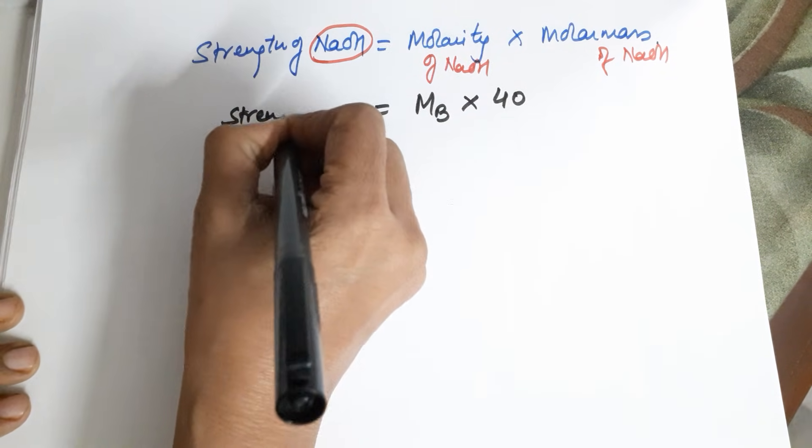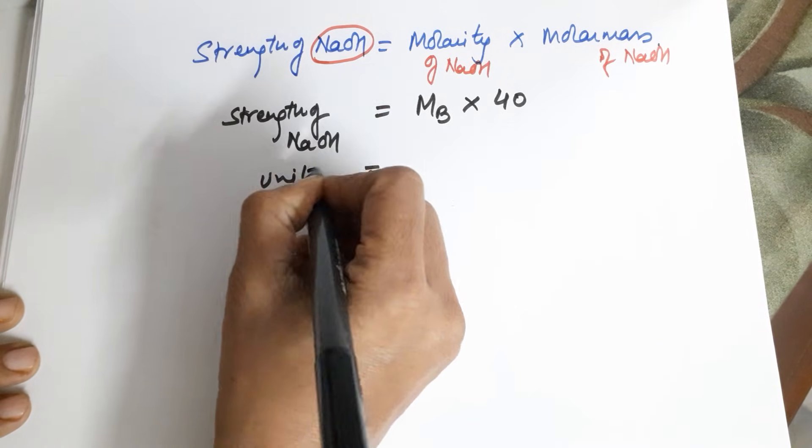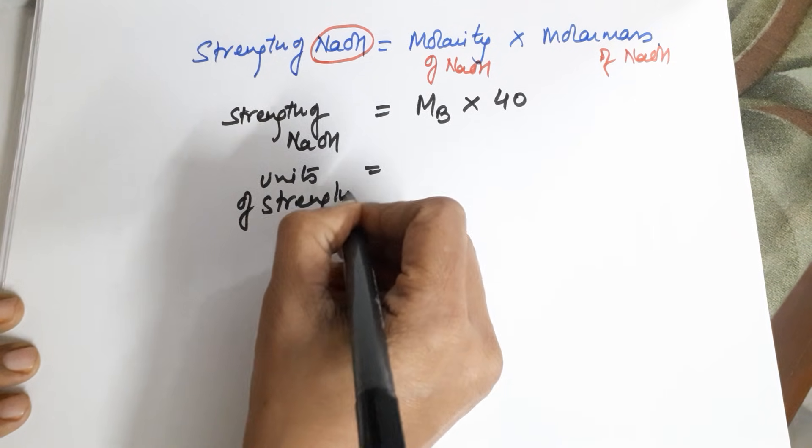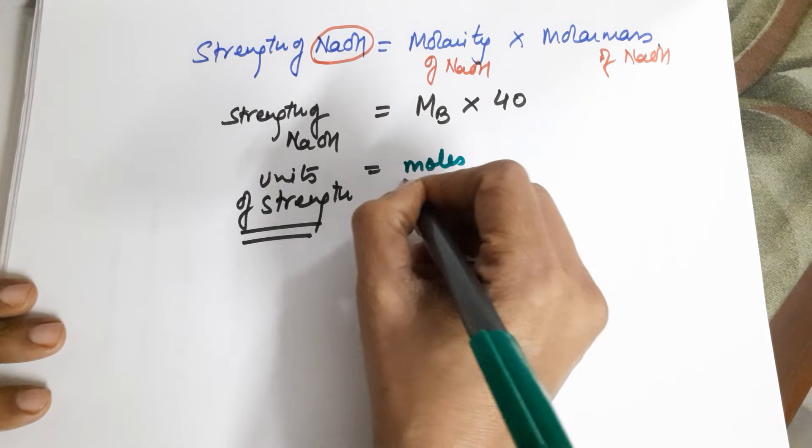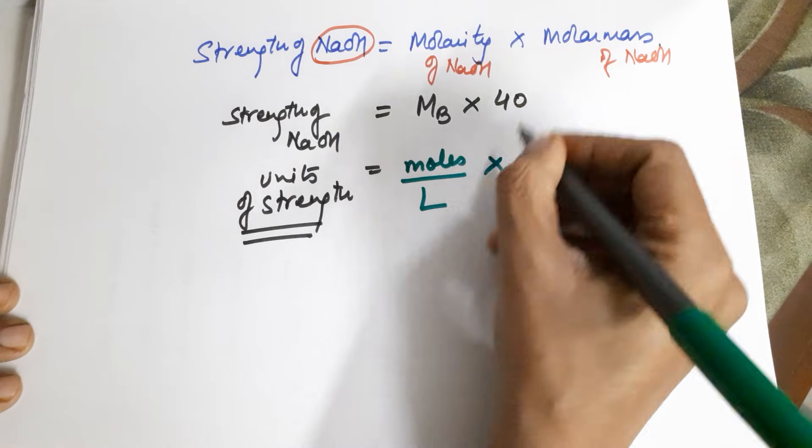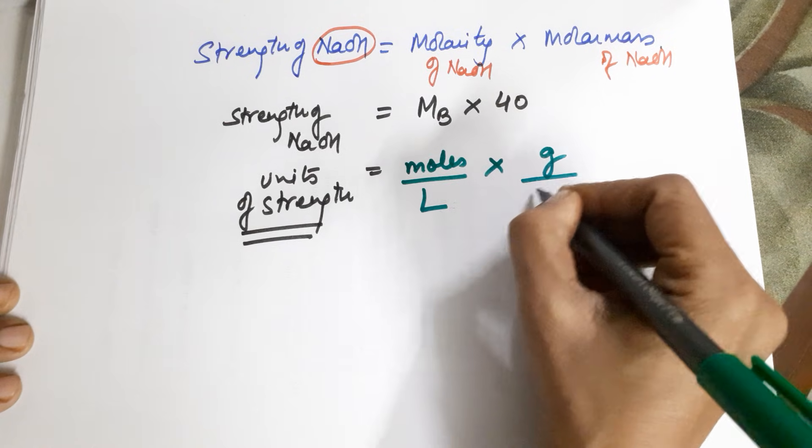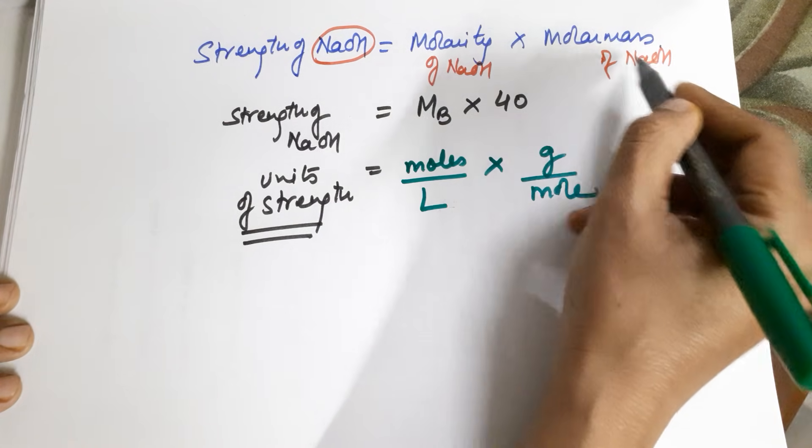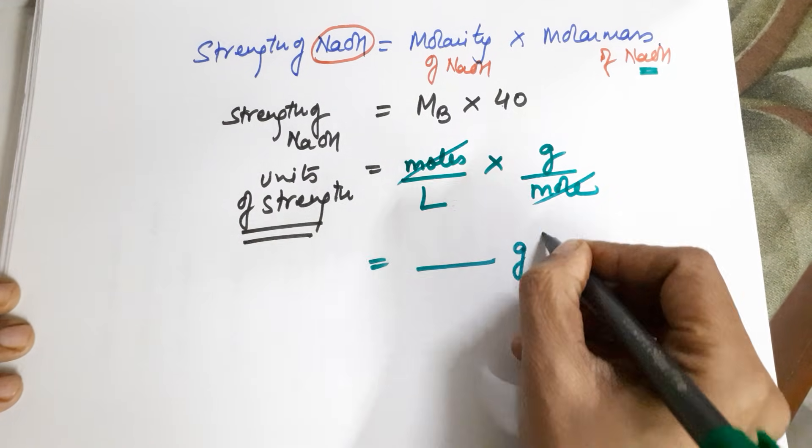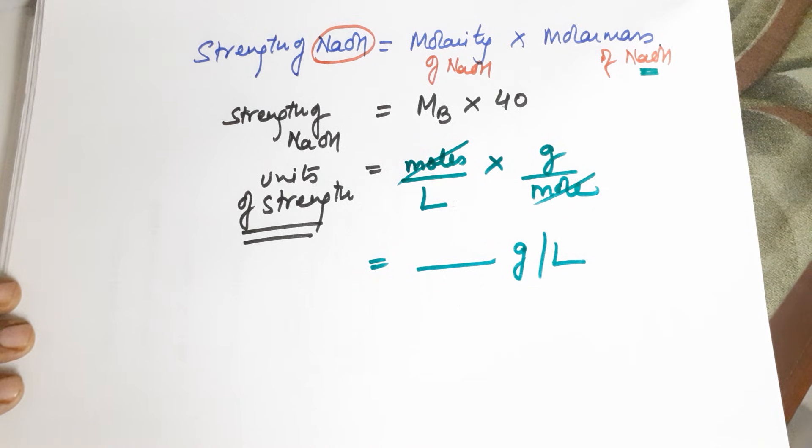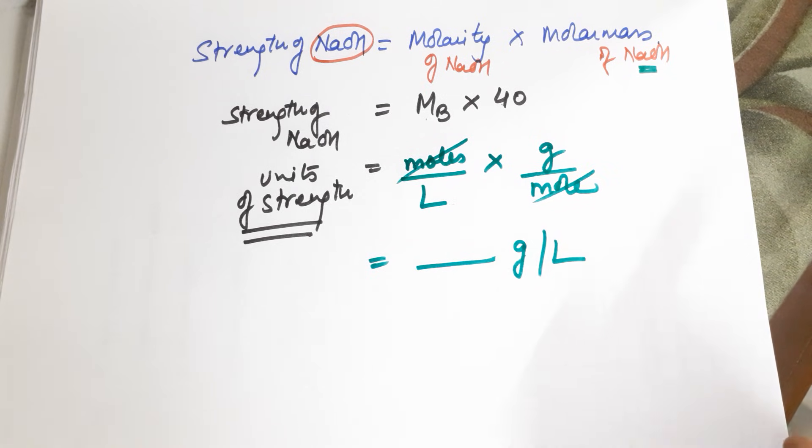So this is what you get as the strength of NaOH by calculation. Also if you talk about the units of strength, molarity is equal to moles upon volume in liters, while molar mass is mass in grams per mole. 40 is the molar mass of NaOH in grams per mole. So the unit comes out to be moles gets cancelled. Whatever you get, please report it in grams per liter. After finding your moles of base from the titration, you multiply it by 40 and you get your conclusions and that is your result.